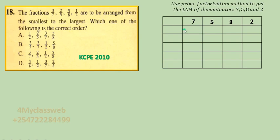If you take 2, it can divide 8 to get 4, and 2 to get 1. But 7 divided by 2 would give a remainder, and so would 5. So we write 2 as our prime factor, drop 7 and 5 unchanged, write 4 below 8, and 1 below 2. That column is done since it has reached 1, and we are left with 7, 5, and 4.